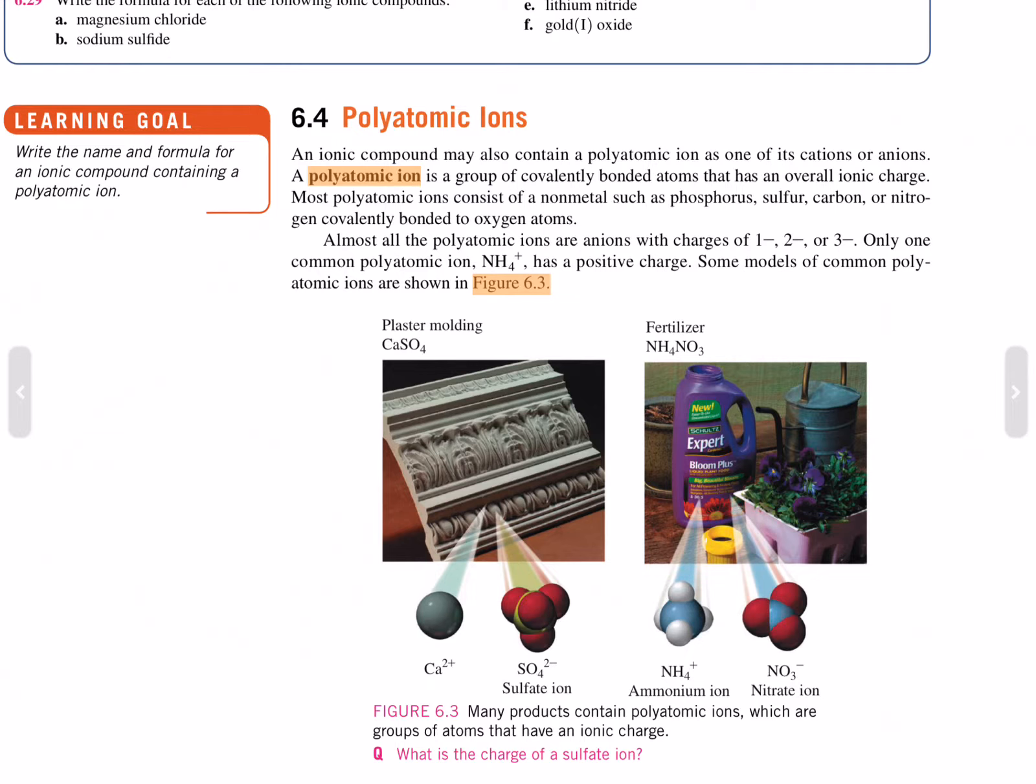A polyatomic ion is a group of covalently bonded atoms that has an overall ionic charge. Most polyatomic ions consist of a non-metal such as phosphorus, sulfur, carbon, or nitrogen covalently bonded to oxygen atoms. Almost all of the polyatomic ions have charges of negative 1, 2, or 3. Only one common polyatomic ion, ammonium, has a positive charge. Some models of common polyatomic ions are shown in Figure 6.3.